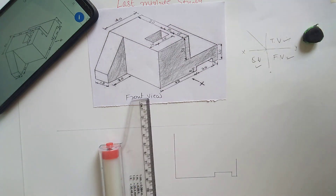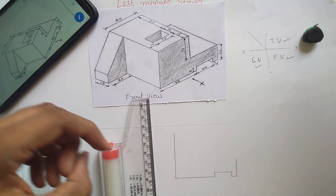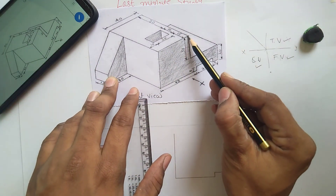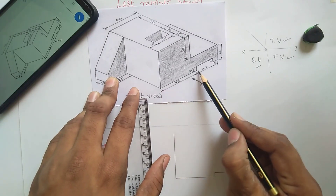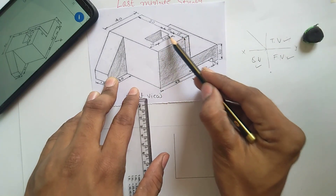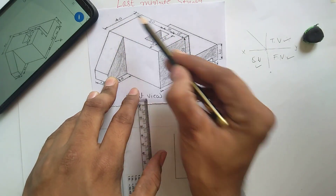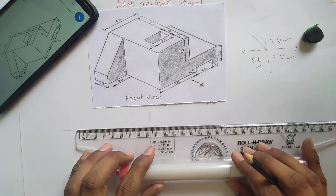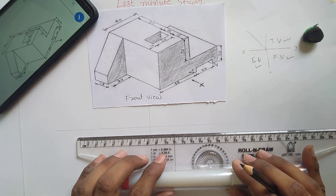The height is 50 mm. Now you can see this line - what is the length of this line? It is not 45 mm, it is given over here which is 40 mm. So construct 40 mm from this line.